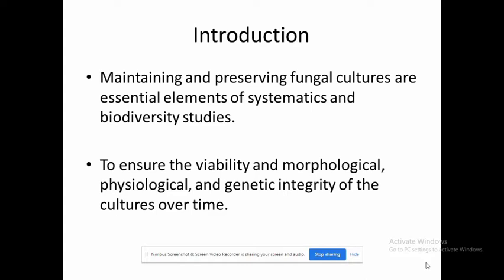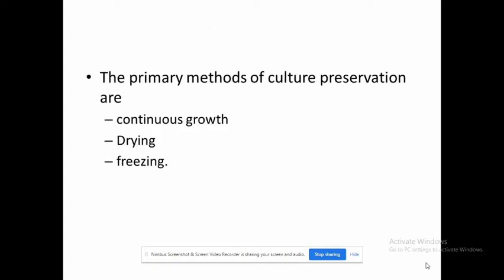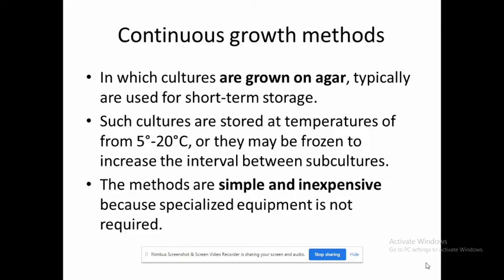The fungi need to maintain viability, morphology, physiological characteristics, and genetic integrity of the strains over a period of time. Every method for culture preservation is very necessary. The main methods we use are continuous growth, drying, and freezing. We use these three primary methods for preservation and modify them with secondary methods.